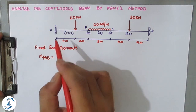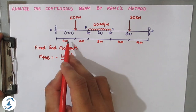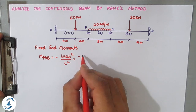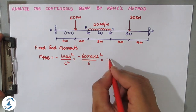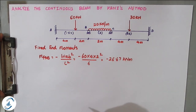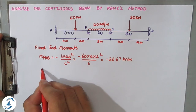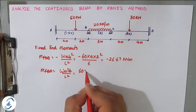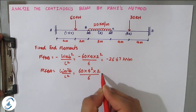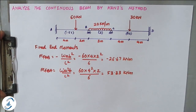MF_AB is anti-clockwise, so it is negative: minus W·a·b²/L², where a = 4m, b = 2m, W = 60 kN. So minus 60 × 4 × 2² divided by 6² comes out to be minus 26.67 kN·m. MF_BA is clockwise so positive: W·a²·b/L² = 60 × 4² × 2 / 6² = 53.33 kN·m.